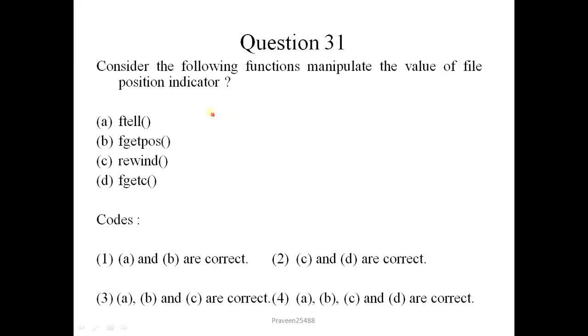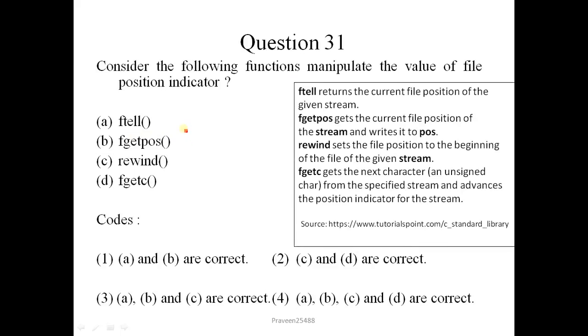Question number 31. Consider the following functions that manipulate the value of file position indicator. I will show you the operation of each function. Ftell returns the current file position of the given stream. FgetPos gets the current file position of the stream and writes it. Rewind sets the file position to the beginning of the file of the given stream. And FgetC gets the next character, an unsigned character from the specified stream, and advances the position indicator for the stream.